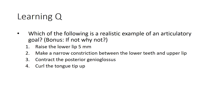A more straightforward question about articulatory goals asks which of four statements best describes one. Statement one says 'raise the lower lip five millimeters.' This seems reasonable but is too precise about distance—in actual speech production, how far you need to move the lower lip to make a sound like 'buh' depends on the jaw position. If the jaw is very open from an 'ah' vowel, you'll need to move the lower lip more; if it's fairly closed from an 'ee' vowel, you'd need to move it less.